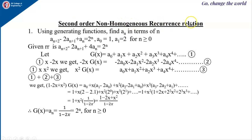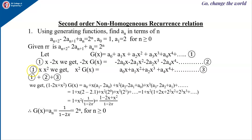Now, coming to the second order non-homogeneous recurrence relation. We consider aₙ₊₂ − 2aₙ₊₁ + aₙ = 2ⁿ. The RHS 2ⁿ confirms this is non-homogeneous, with a₀ = 1 and a₁ = 2, for n ≥ 0. The first lower-term coefficient is −2, so multiply by −2x, and the second lower-term coefficient is 1, so multiply equation 1 by x².